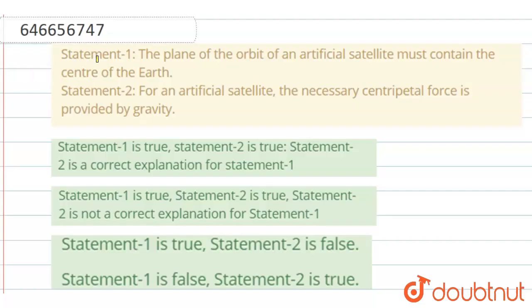Hello, dear student. The question says in the form of two statements. Statement 1 says: the plane of the orbit of an artificial satellite must contain the center of the earth. And statement 2 says: for an artificial satellite, the necessary centripetal force is provided by gravity.